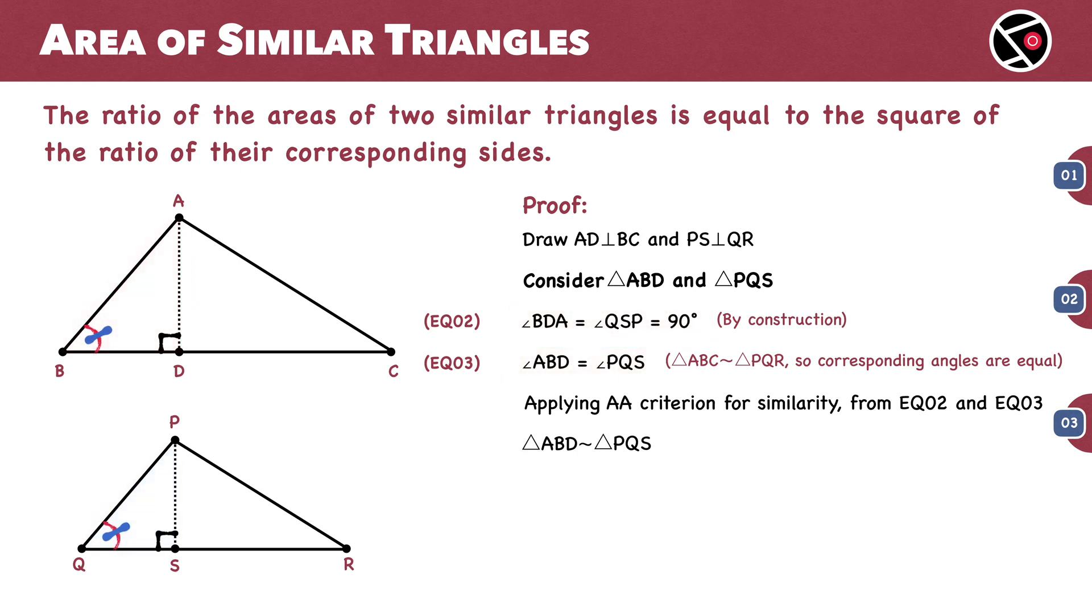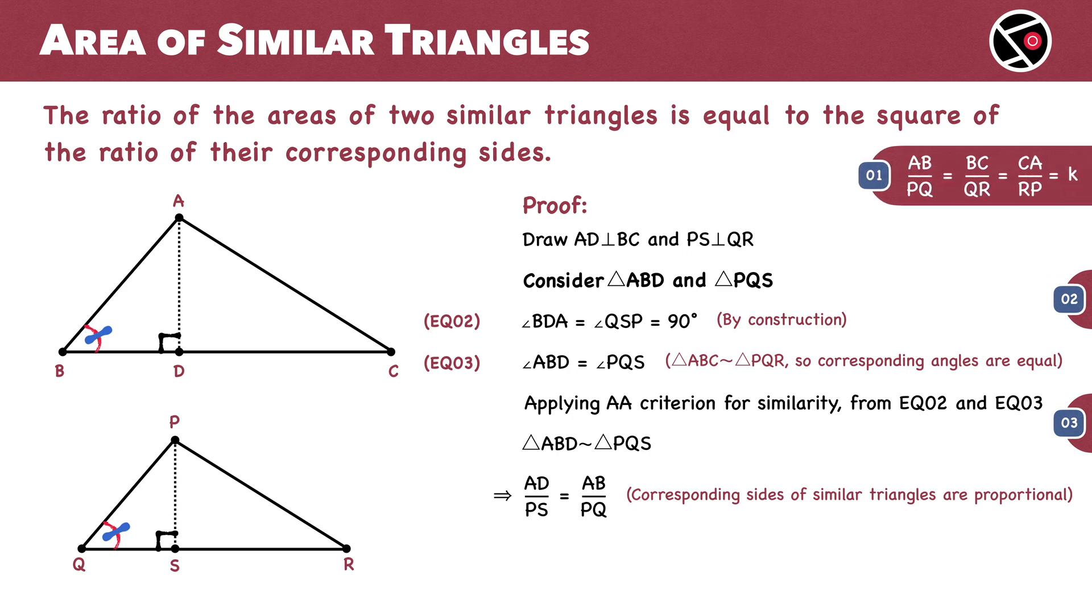Since corresponding sides of similar triangles are proportional, we have AD by PS equal to AB by PQ. Going back to equation 1, we know that AB by PQ is K. So this is equation 4.